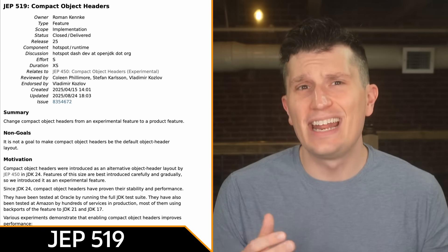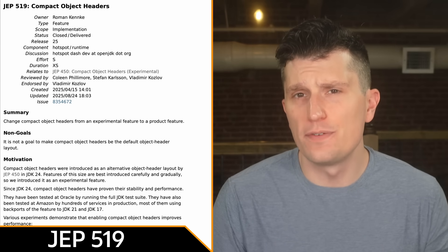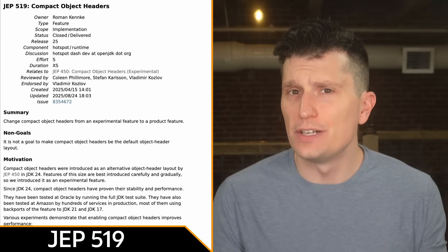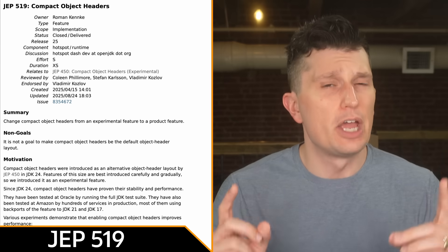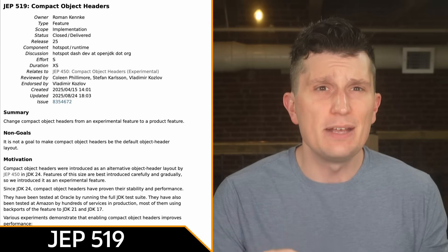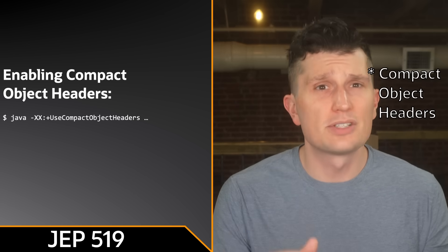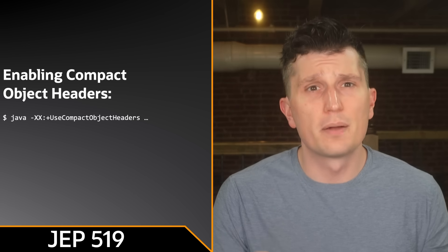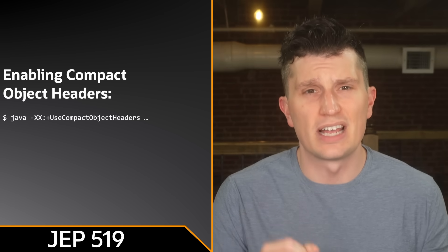The compact headers feature added as an experimental feature in JDK 24 has been promoted to a final feature in JDK 25. It reduces the minimum size an object header can be, which reduces heap sizes by 10 to 20%. Compressed object headers can be enabled with a JVM arg plus used compact object headers.